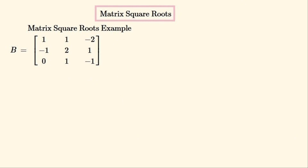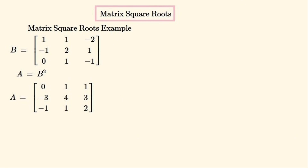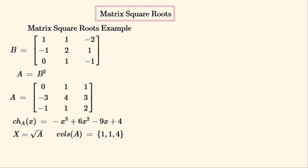Now for the second example. We'll start off with a 3×3 matrix, find the square of it, and set it equal to A. So we know A has at least one real square root, and we'll work backwards to find it. This is the characteristic polynomial of matrix A. We'll set X to be the square root of A and try to find the matrix X. These are the eigenvalues of A, which are the roots of the characteristic polynomial of A.